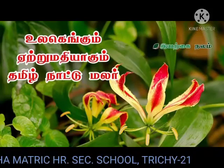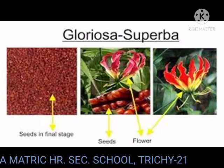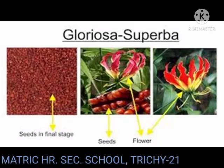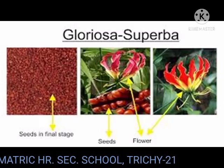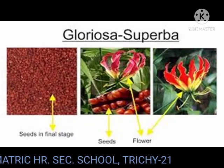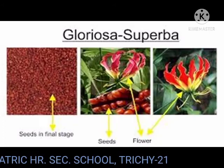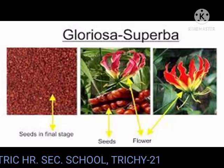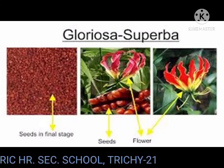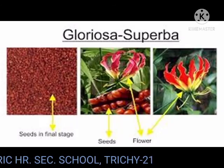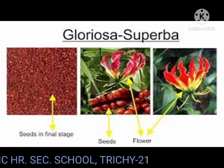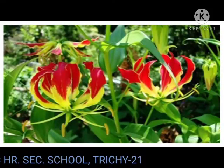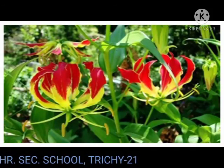State flower of Tamil Nadu: Gloriosa superba. The name is composed of two Greek words — gloriosa means full of glory, superba means superb. The flower petals are waxy on the edges, greenish yellow when in bloom, turning flame red at the tips when mature. The plant contains the alkaloid colchicine, widely used as an experimental tool in the study of cell division. Leaves are sub-opposite and the leaf tip is modified into a tendril.